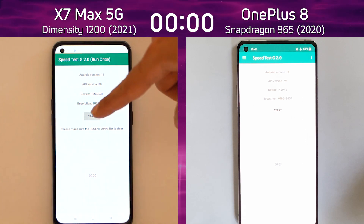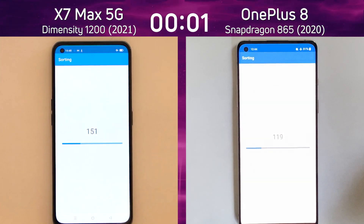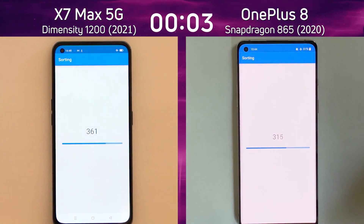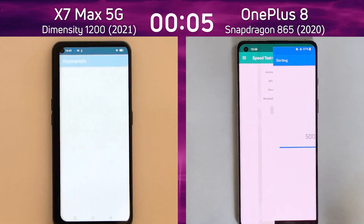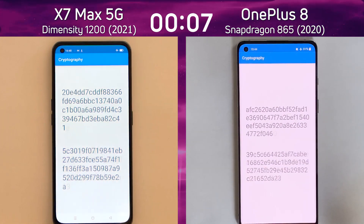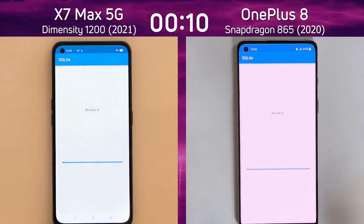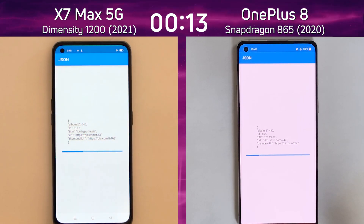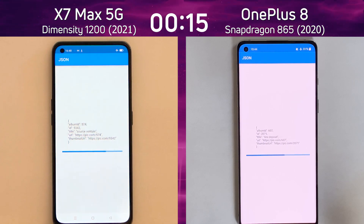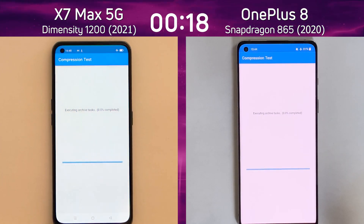We have the Realme X7 Max 5G on the left hand side with the MediaTek Dimensity 1200, and on the right hand side we have the OnePlus 8 with the Snapdragon 865. These are very different CPU and GPU configurations — Cortex A78 based on the left, A77 based on the right, Mali GPU on the left, and Adreno GPU on the right.